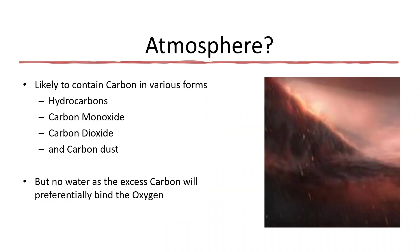The atmosphere of such a world would likely contain lots of carbon: hydrocarbons, carbon monoxide, carbon dioxide, and perhaps even pure carbon dust — buckyballs and soot particles — in the atmosphere. It would not have water, because if there is an excess of carbon, the carbon binds with oxygen very ferociously, turning it into carbon monoxide and carbon dioxide rather than allowing hydrogen to bond with it as water. Any remaining hydrogen would be absorbed by yet more carbon to give hydrocarbons.